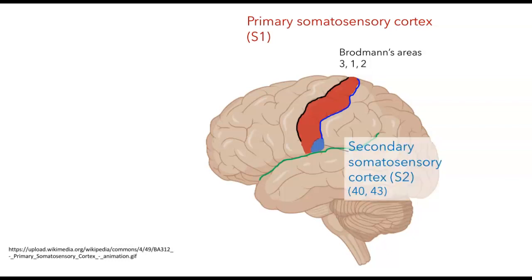There's also a secondary somatosensory cortex, called S2, which includes parts of Brodmann's areas 40 and 43. It lies on the upper side of the lateral fissure. Finally, there's an area I'll call the somatosensory association cortex, which includes Brodmann's areas 5 and 7, which will further process information.